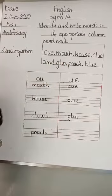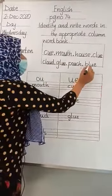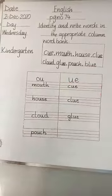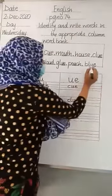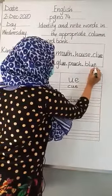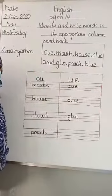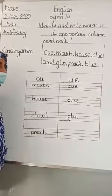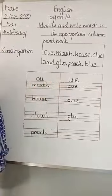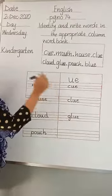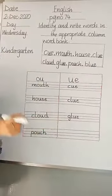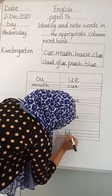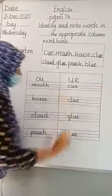Now the last word is B-L-U-E, 'blue'. The word 'blue' has U sound. Where do we write the word 'blue' — in the 'ow' column or the U column? We have to write the word 'blue' in the column of U, because the word 'blue' has U sound. B-L-U-E.